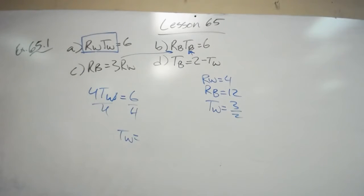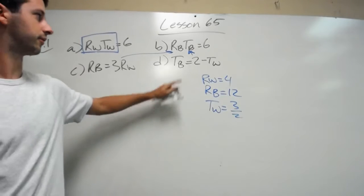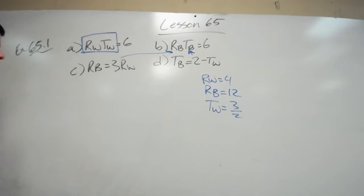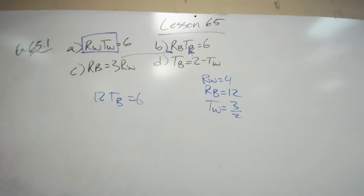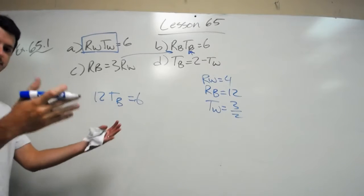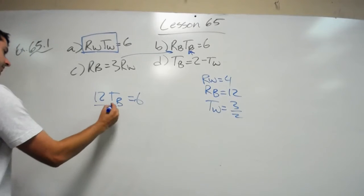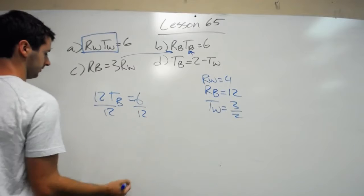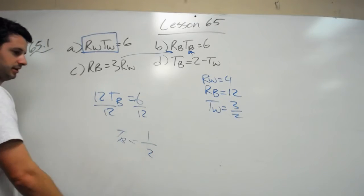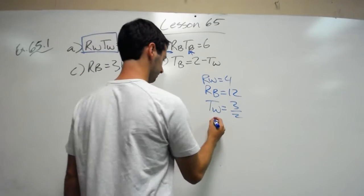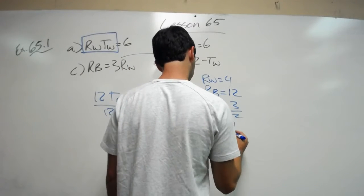And then from there, we solve for tb. I plug in rb right there. 12 times tb equals 6. Easy peasy. Divide by the 12. 1 half equals tb. So now we know all 4 of our variables.